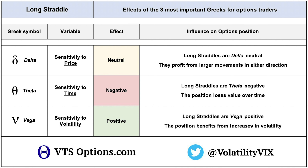The Greeks are statistical values that provide us a way to measure the sensitivity of an option's value with respect to other factors. There are over ten of these, but only three that we really need to pay attention to, and those are delta, theta, and vega, representing price, time, and volatility. Delta is an option's sensitivity to price. Long straddles are delta neutral — we don't care which direction the underlying goes. We just know they profit off larger moves in either direction, and of course the larger the move, the better.